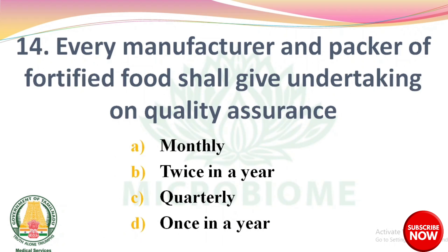Question 13: Every manufacturer and packer of fortified food shall give the undertaking on quality assurance — options: monthly, twice in a year, quarterly, once in a year. The right answer: option B, twice in a year.